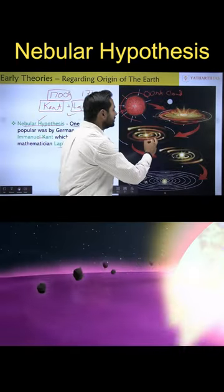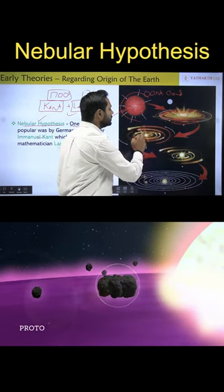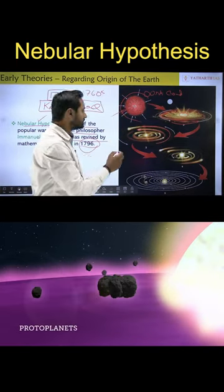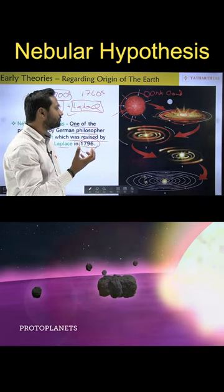When the dust particles or debris started revolving around the nebula or the sun, we can see the initial form of the sun, the starting phase of the sun.